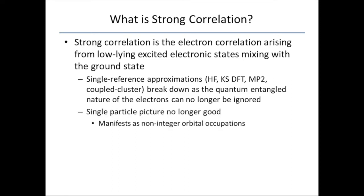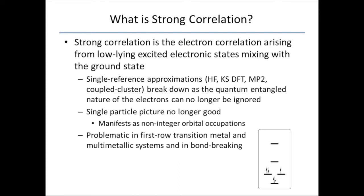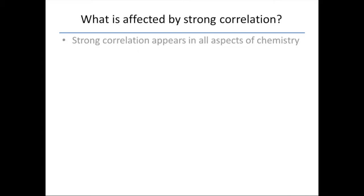The single particle picture breaks down. So if you're used to thinking about things in orbitals, which as an experimental chemist is all we think about. This shows up as non-integer orbital occupation numbers, which can be a bit confusing. And this problem is especially bad with first-row transition metals, multi-metallic systems, bond-breaking systems, excited states. Pretty much all aspects of chemistry can get screwed up by not accounting correctly for strong correlation when it's present.